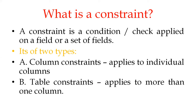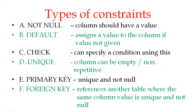A row constraint is also called a table constraint. The column constraint applies to an individual column, whereas the table constraint applies to more than one column. The different types of constraints available are: NOT NULL, DEFAULT, CHECK, PRIMARY KEY, UNIQUE, and FOREIGN KEY — six types in total. NOT NULL is used to check whether a column has been left empty; if a column should not be empty, we use the NOT NULL constraint.